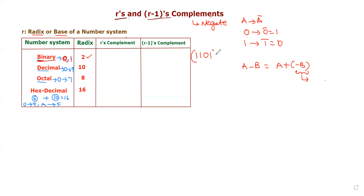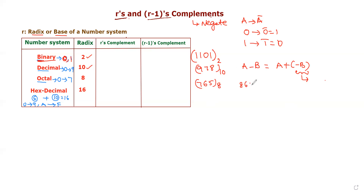For the decimal number system, digits always start from 0 and go up to 9, so the total is 10 digits and the radix is 10. An example is 9 7 8 with base 10. For the octal number system the radix is 8, but you only use digits 0 to 7. So 7 6 5 is a valid octal number with base 8. However, 8 6 4 is an invalid octal number because the digit 8 is not valid in base 8.